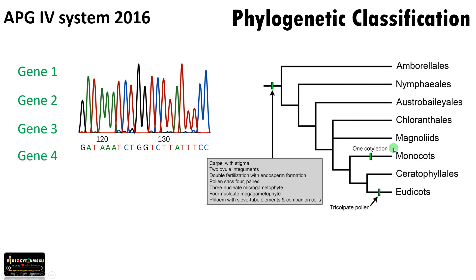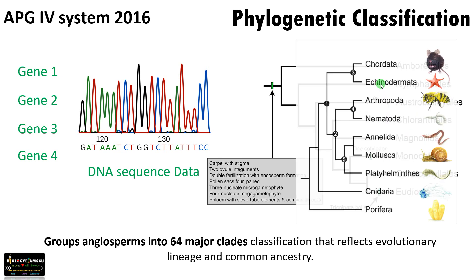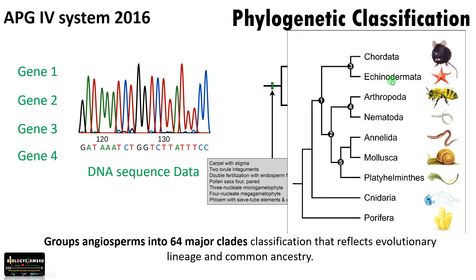As you can see, there is a common ancestry and the groups are arranged accordingly — monocots, eudicots, etc. The APG system classified angiosperms into 64 major clades that reflect evolutionary lineage and common ancestry. The same system is also applied in the case of animals, based on DNA sequence data.